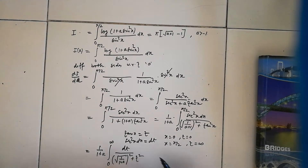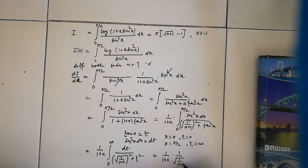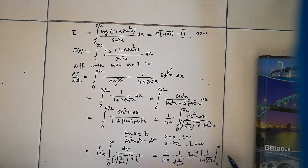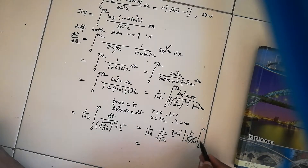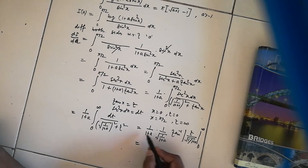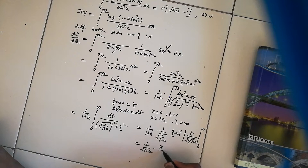The integral becomes 1/(1+a) times the integral from 0 to infinity of dt / (1/(1+a) + t²). Using the standard formula, this equals 1/(1+a) times (1/sqrt(1/(1+a))) times arctan(t / sqrt(1/(1+a))) evaluated from 0 to infinity. Putting in the limits gives pi/2 - 0, and since the two factors combine, we get sqrt(1+a) · pi/2. So dI/da = pi/(2·sqrt(1+a)).